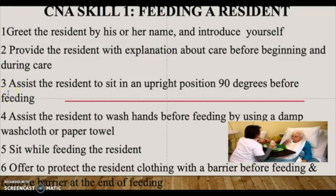The third component is to assist the resident to a sitting upright position at 90 degrees before feeding. The rationale is that having the patient in an upright position prevents aspiration. You must have them upright before you start any type of feeding — make sure they are not in a slouched position.